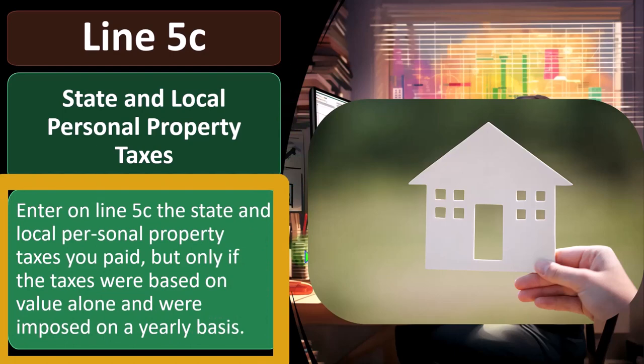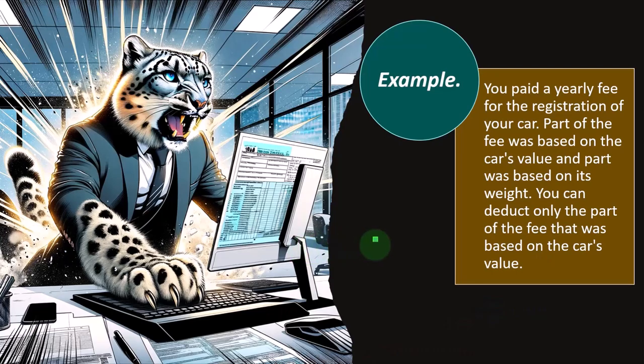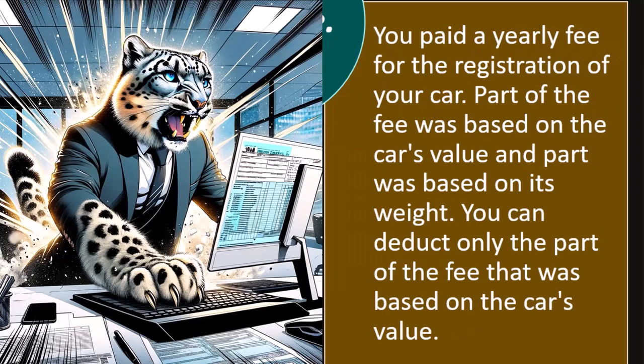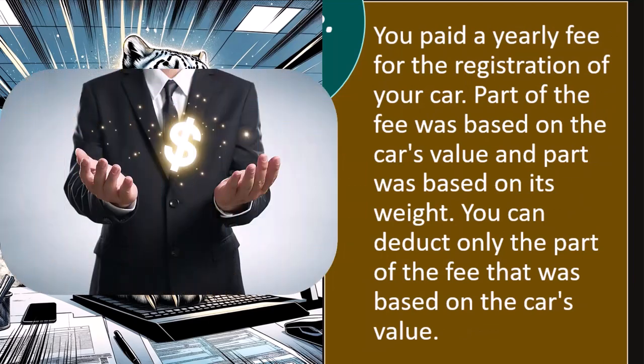Enter on line 5C the state and local personal property taxes you paid, but only if the taxes were based on value alone and were imposed on a yearly basis. For example, you paid a yearly fee for the registration of your car. Part of the fee was based on the car's value and part was based on its weight. You can deduct only the part of the fee that was based on the car's value. This becomes something a little complex, because only part of the car tax is technically deductible. Although it's not a huge dollar amount, it will typically come up because everybody has a vehicle and is generally paying that tax.